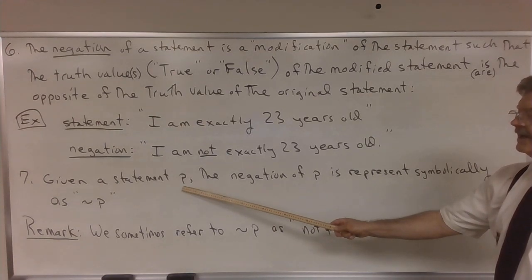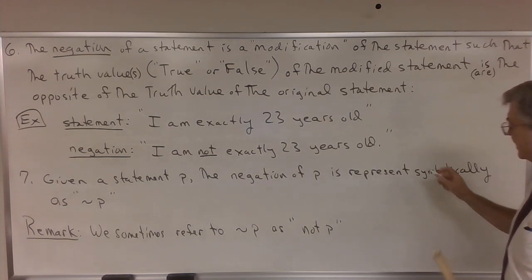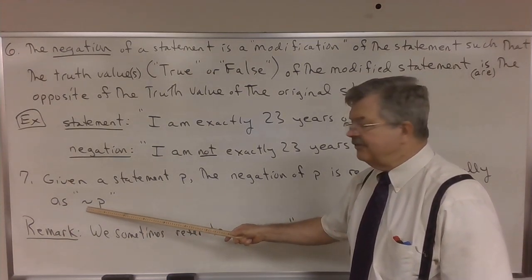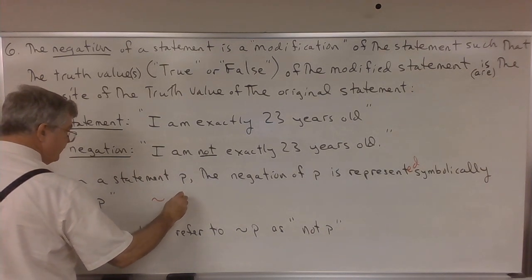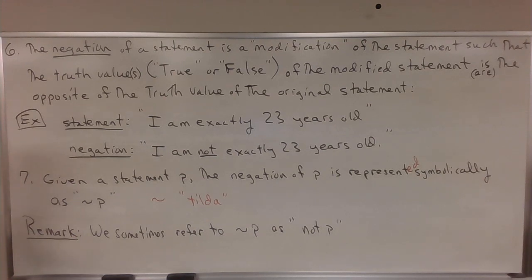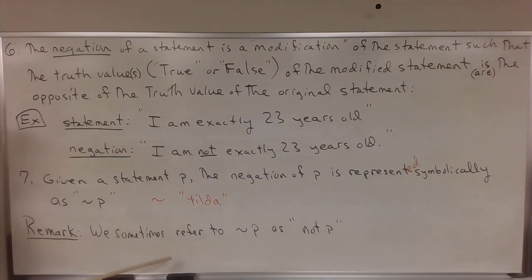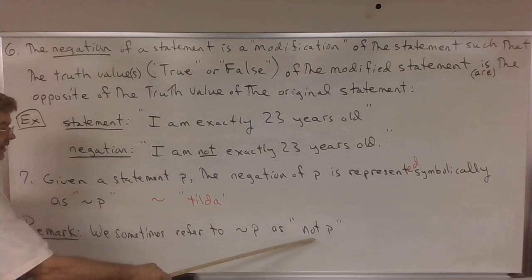Given a statement represented symbolically with the letter P, the negation of P is represented symbolically as a tilde P — that squiggly symbol in front of P. That symbol is called a tilde, spelled T-I-L-D-A. Tilde P is the negation of P. We sometimes refer to this as 'not P.'